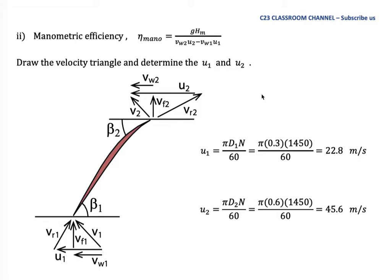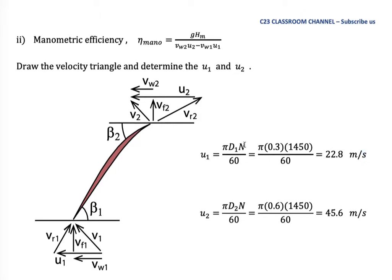The first parameter calculated by fixed equation is u, the tangential velocity. The basic equation is u = πDN/60. Since we have inlet and outlet: U1 = πD1·N/60 and U2 = πD2·N/60. The unit for u is meters per second and N is in rotations per minute, so we divide by 60. Substituting values: U1 = 22.8 m/s and U2 = 45.6 m/s.